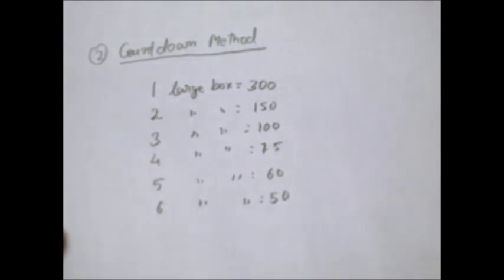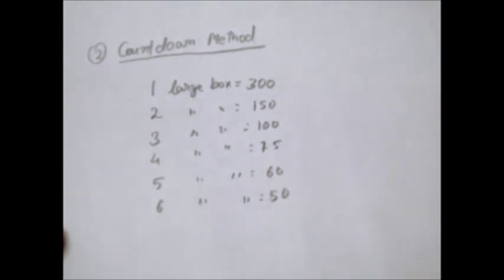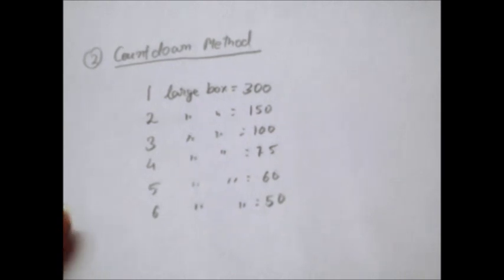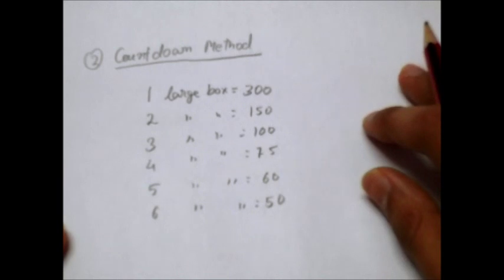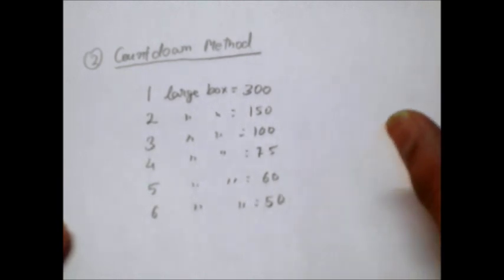Now how do these rates come? Let's calculate them. We saw the first method where it was 1500 divided by number of small boxes between two consecutive R-R intervals.